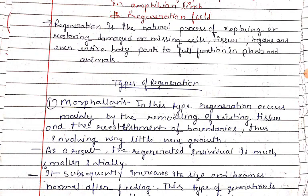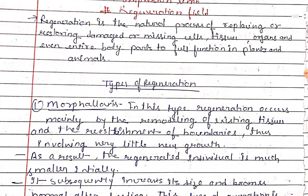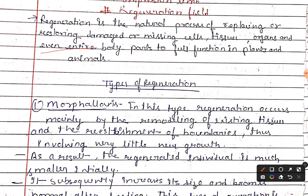Regeneration is the natural process of replacing or restoring damaged or missing cells, tissues, organs, and entire body parts to function in plants and animals. Regeneration is a natural process in which any damaged or missing cells are replaced. If any part was damaged, it becomes the same type and the functioning of it remains the same in plants and animals.